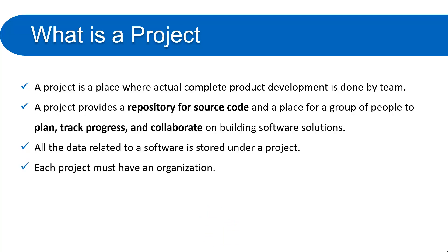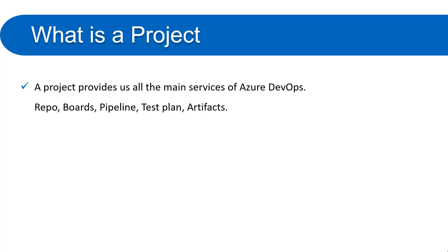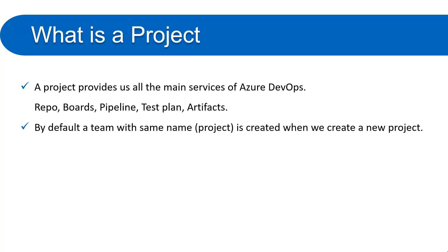Each project must have an organization, as we learned in the previous video. A project provides all the main services of Azure DevOps: Repos, Boards, Pipelines, Test Plans, and Artifacts. By default, a team with the same name as the project is created when we create a new project.